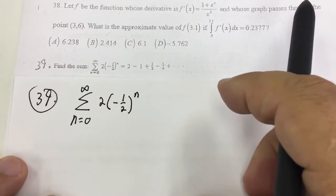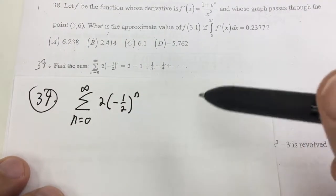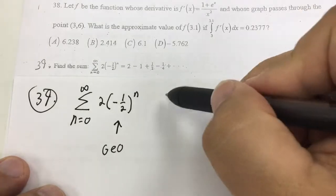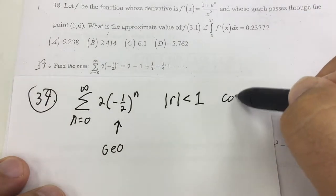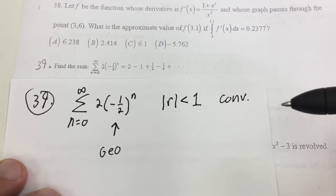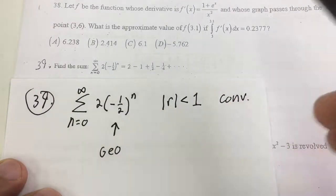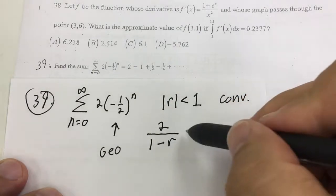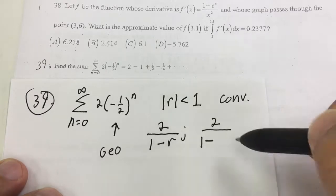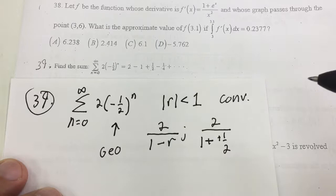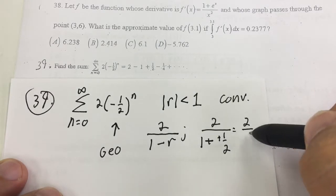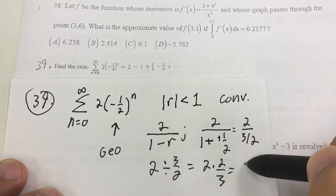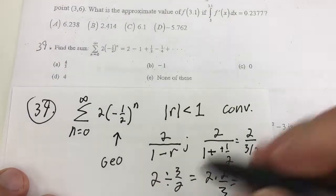For number 39, this is one I cut and pasted from the BC — it's actually a BC question, perhaps even an algebra 2 question. They want me to find the infinite sum and I notice it's a geometric series with a common ratio whose absolute value is less than 1, so this is going to converge. If I throw in 0, the first term is 2. I divide that by 1 minus the common ratio: 2 over (1 minus negative 1/2) equals 2 over 3/2, which is 4/3. The answer is choice A.